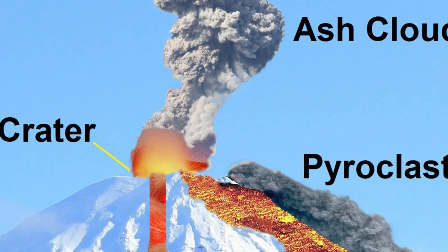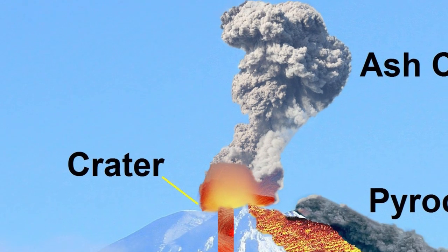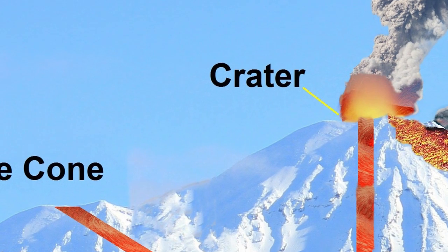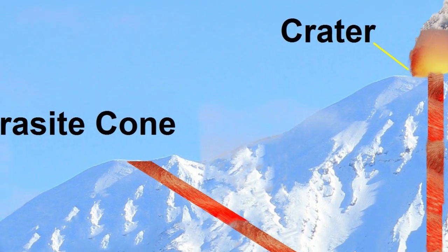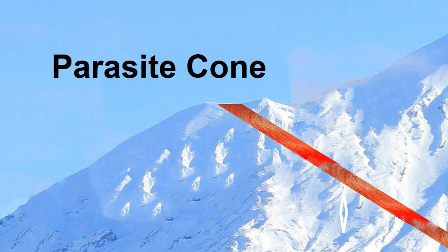The magma might enter an existing vent and blast out the plug. Alternatively, it might enter an existing vent, be unable to dislodge the plug, and burst out the side, creating a parasite cone.